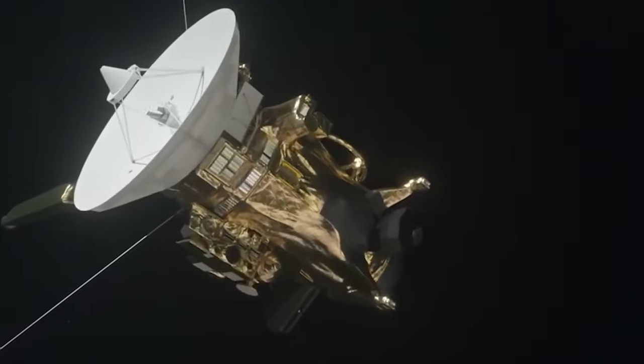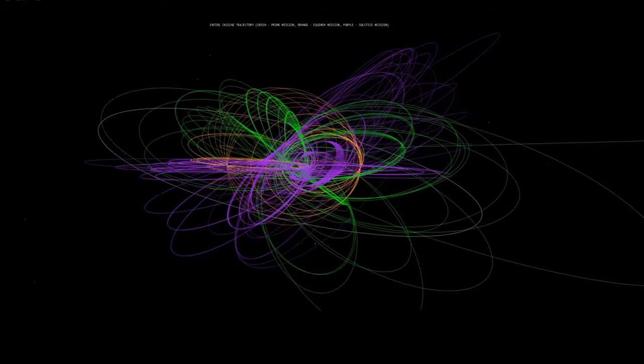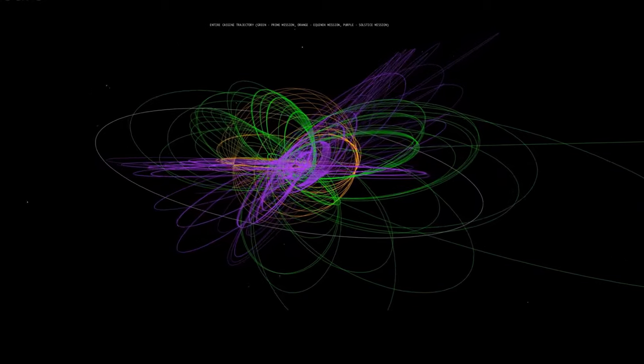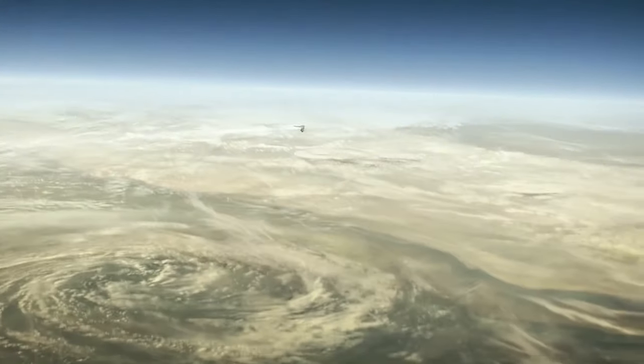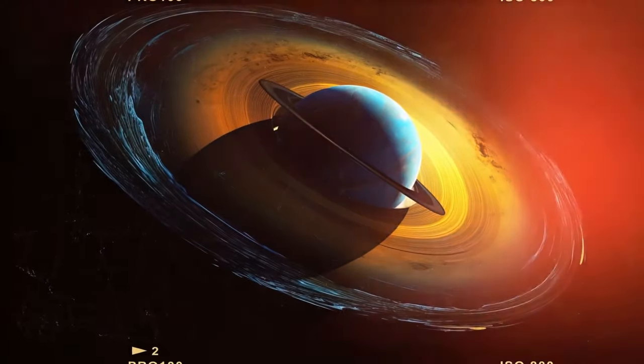Saturn, the second-largest planet in our solar system, possesses a core about half its radius, weighing 12 to 20 times more than Earth. What's astonishing is that Saturn's density is so low that it would float in water if we had a reservoir large enough to contain it.